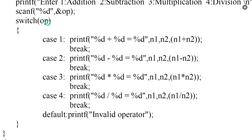Case 1: when op equals 1, perform addition — print n1 plus n2 equals n1 plus n2 — then break to exit the switch block. Case 2: when op equals 2, perform subtraction — print n1 minus n2 equals n1 minus n2 — then break to exit the switch block. Case 3: when op equals 3, print n1 into n2 equals n1 into n2 — then break to exit the switch block. Case 4: when op equals 4, print n1 divided by n2 equals n1 divided by n2 — then break to exit the switch block.